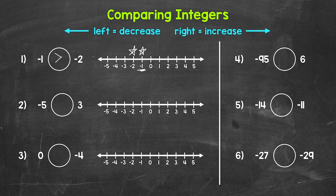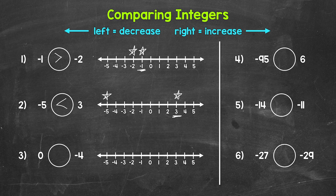Moving on to number two, we have negative five is greater than, less than, or equal to three. Let's take a look at the number line. Three is right here and negative five is right here. Three is further to the right, so three is greater than negative five. Reading this from left to right, negative five is less than three. With a negative and a positive, the positive is always going to be greater — and relating to temperature, three degrees is warmer than negative five degrees.